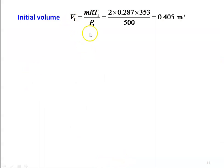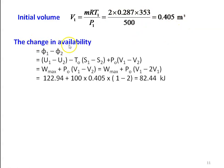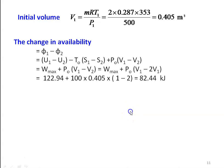Initial volume V1 = MRT1/P1 = 2×0.287×353/500 = 0.405 m³. Change in availability = W_max + P0(V1 − V2) = W_max + P0(V1 − 2V1) = 122.94 + 100×0.405×(1−2) = 82.44 kJ.